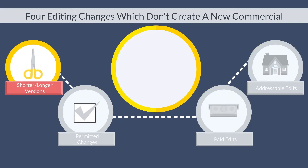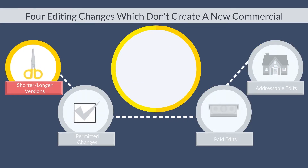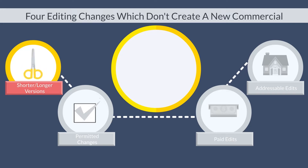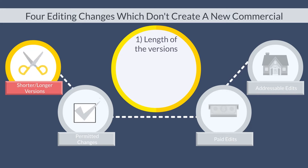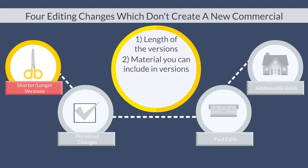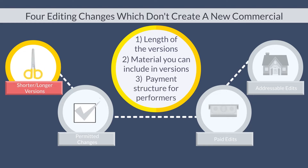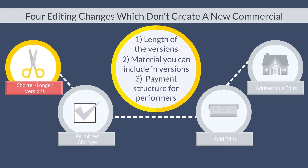Let's break it down more, starting with shorter or longer versions. Within this editing change, there are three elements to note: one, the length of the versions; two, the material you can include in the versions; and three, the payment structure for performers that appear in the different versions.